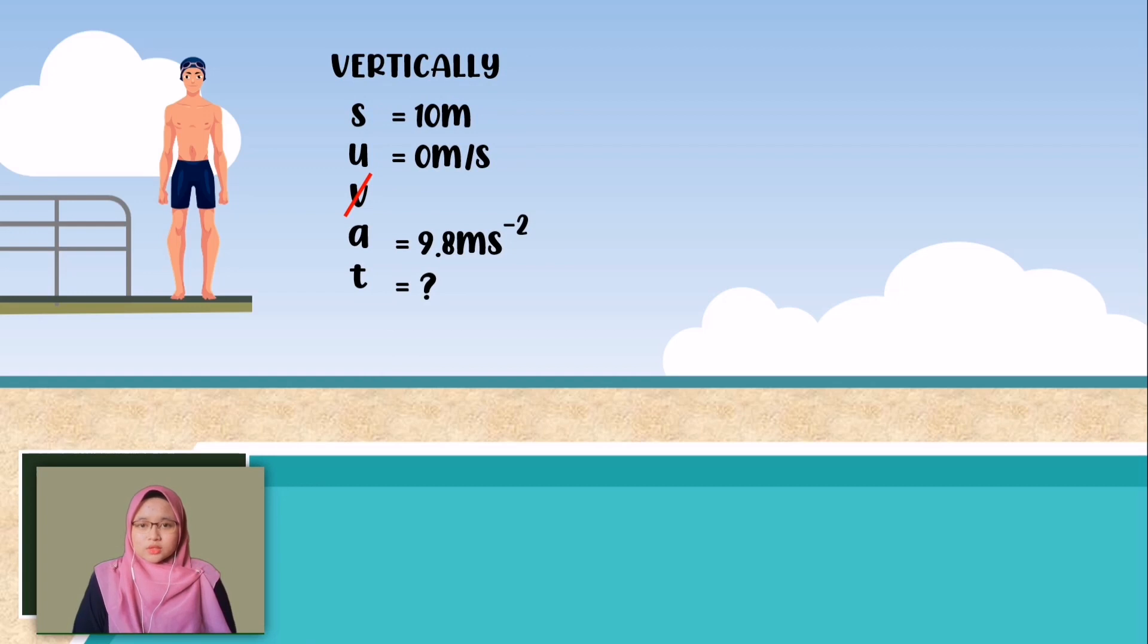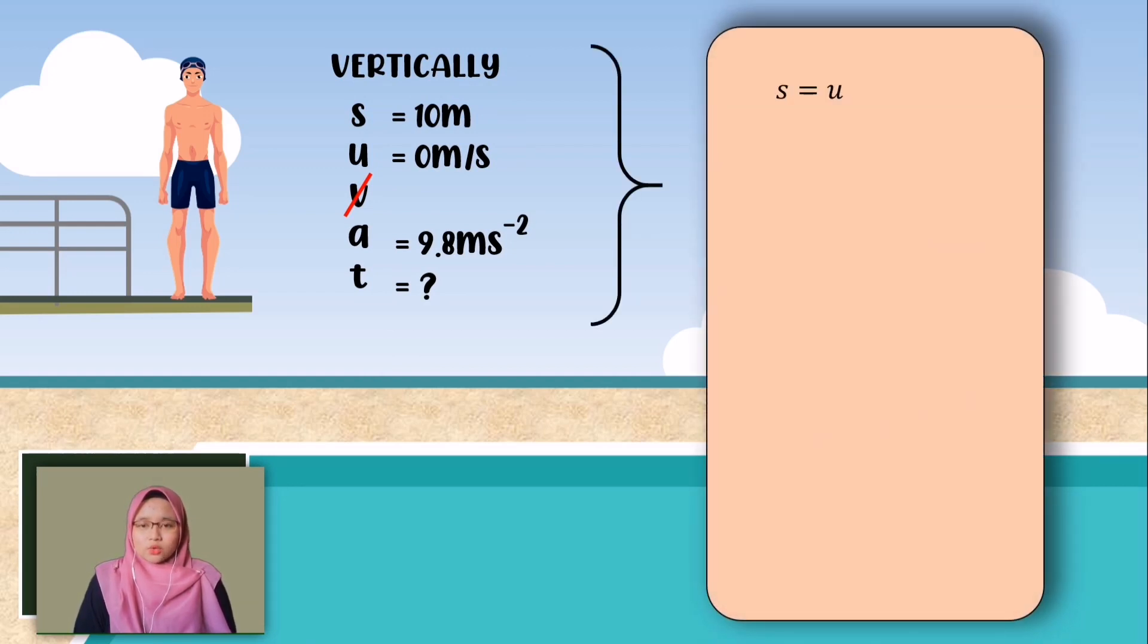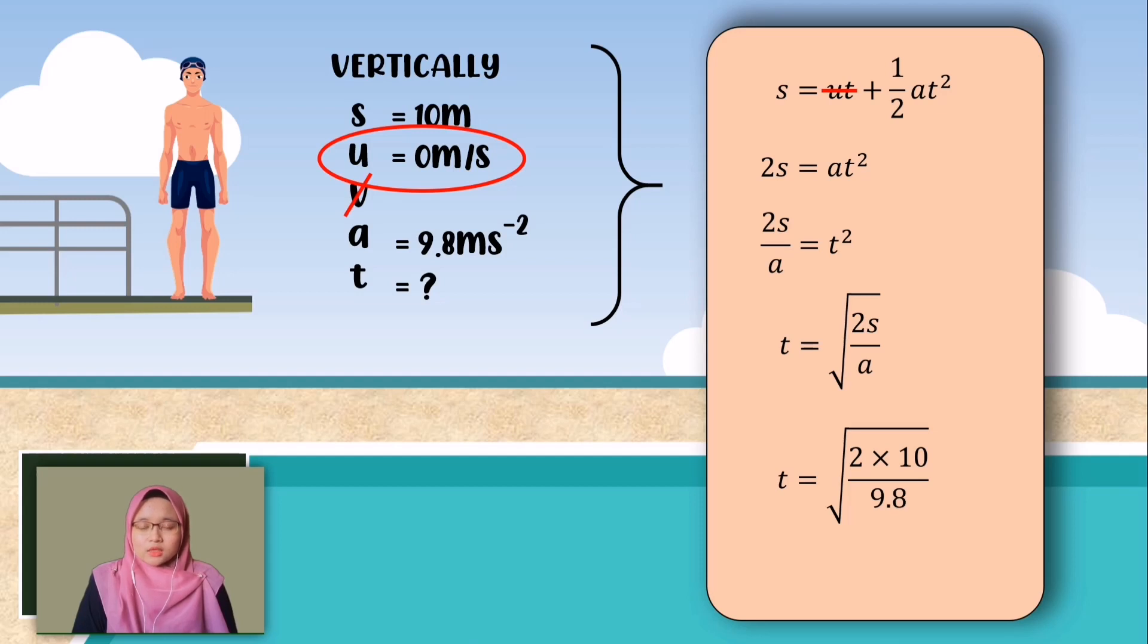As we write down all the clues, we can use the equation S equals UT plus half AT squared. So we know that U is 0, then we can get rid of UT here. We need to rearrange the equation to find T. So 2S equals AT squared. 2S divided by A equals T squared. So T equals the square root of 2S divided by A. We can insert all the clues into the equation and we will get T equals the square root of 2 times 10 over 9.8. And then we will get T equals 1.43 seconds.